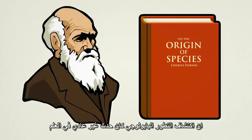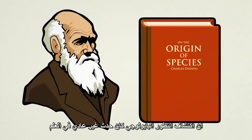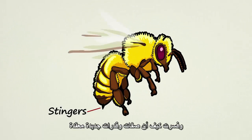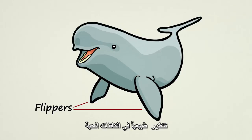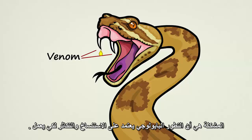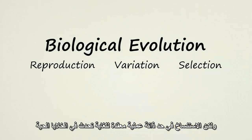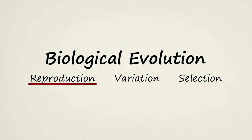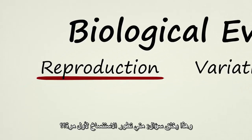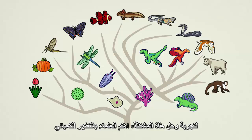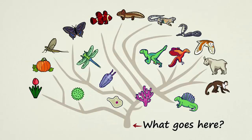The discovery of biological evolution was an incredible breakthrough in science. It explained how new complex traits and abilities develop naturally in living things. The problem is, biological evolution depends on reproduction in order to work. Reproduction, however, is an extremely complex process in and of itself. This begs the question: how did reproduction first evolve? To try and solve this mystery, many scientists are looking into chemical evolution.